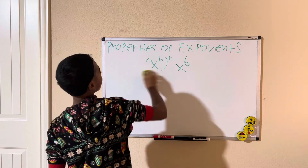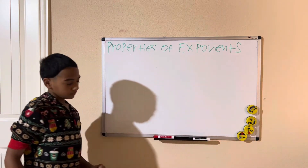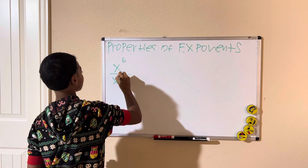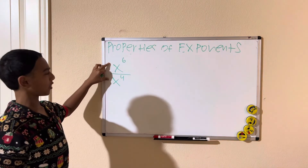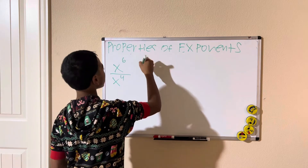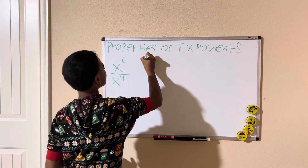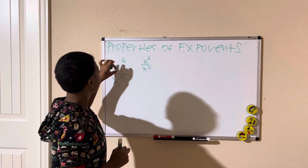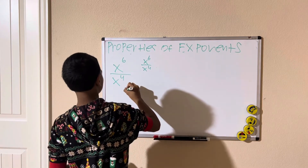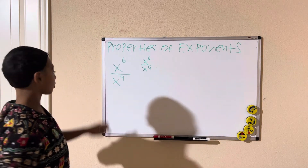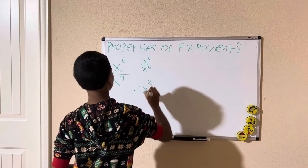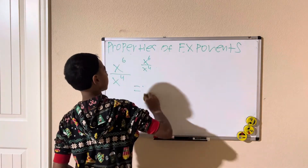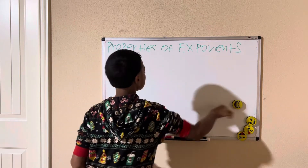Now let's do one last problem. If we have x to the sixth divided by x to the fourth — when you multiply you add exponents, but when you divide, you subtract them. So x to the sixth divided by x to the fourth: 6 minus 4 equals 2, giving us x squared.